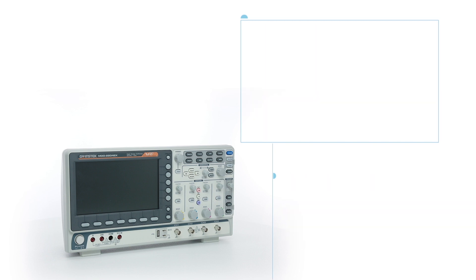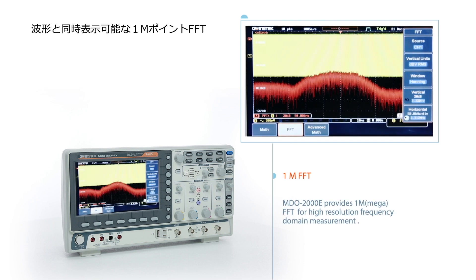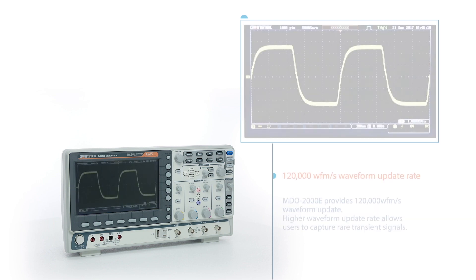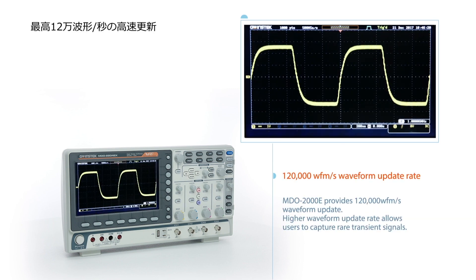It provides 1 Mega FFT for high-resolution frequency domain measurement and 120,000 waveforms per second update rate. A higher waveform update rate allows users to capture rare transient signals.